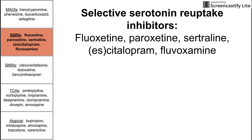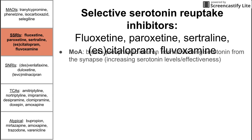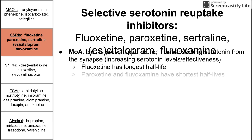Next we have the SSRIs — the selective serotonin reuptake inhibitors, very commonly used. These include fluoxetine, paroxetine, sertraline, citalopram, escitalopram, and fluvoxamine. Their mechanism of action is that they block the presynaptic neuron from absorbing serotonin from the synapse, effectively increasing serotonin levels in the synapse. It's worth noting that fluoxetine has the longest half-life, while paroxetine and fluvoxamine have the shortest half-lives.